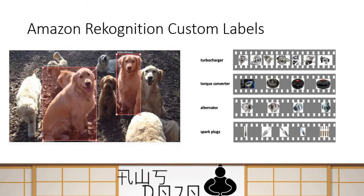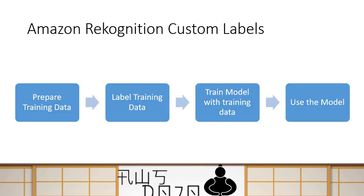Let's see how Amazon Rekognition custom labels works. It's a very simple but powerful service — it's a four-step configuration. In the first step, you prepare your training data. In the second step, you label your training data. In the third step, you train your model. And in the fourth step, you use the model.